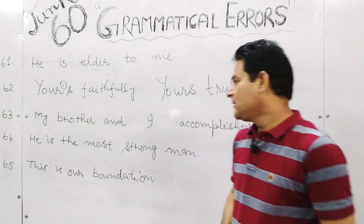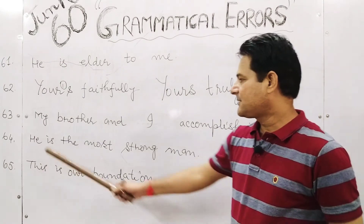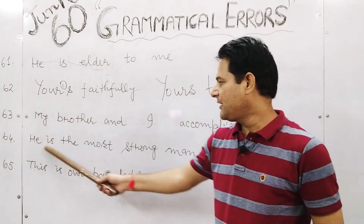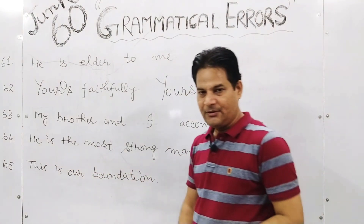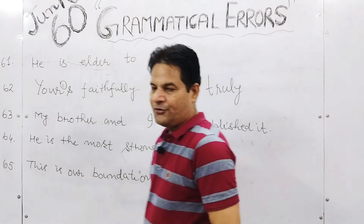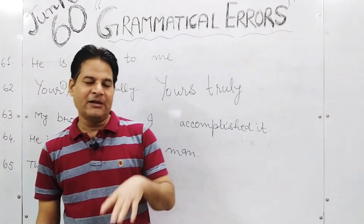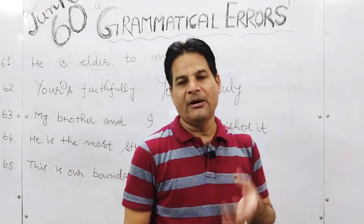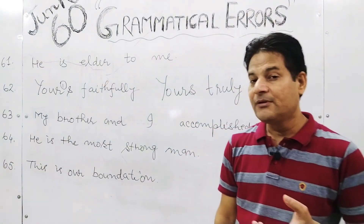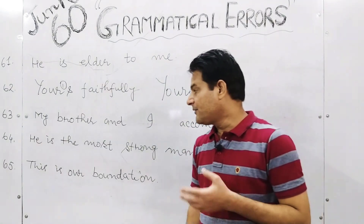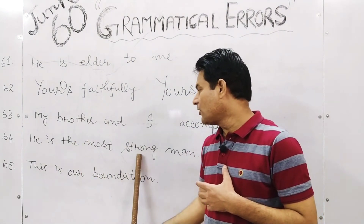Sentence 64: 'He is the most strong man.' Do you remember that we spoke about double comparatives? Here you have 'the most strong' — this is a double superlative error.